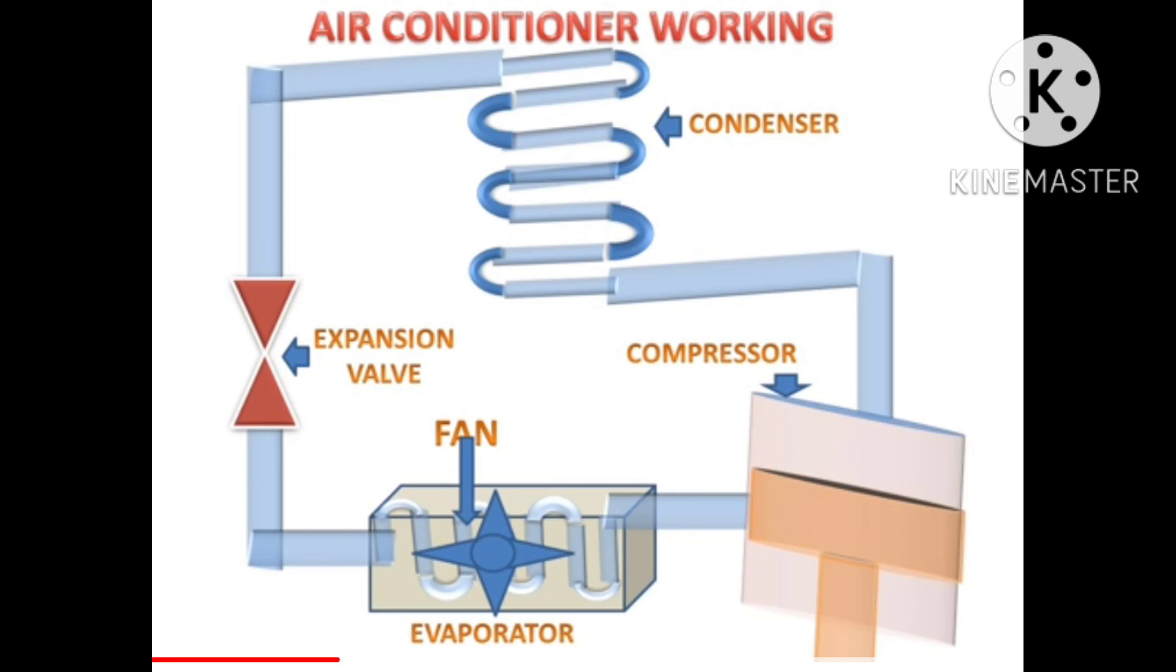These are the main four parts of window air conditioning system. Now, Freon gas is used as the refrigerant in these window air conditioning systems.